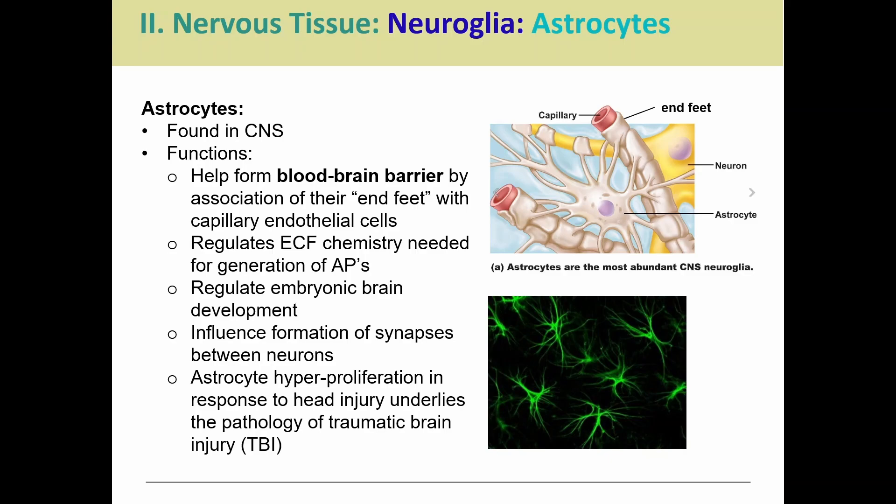Astrocytes are also going to help regulate embryonic development of the brain — that early development — helping influence the synapses, the connections between neurons. And we do see that when someone has a traumatic brain injury, astrocytes multiply way more than normal. They go through what's called hyperproliferation, so we see way more than we would normally see in response to that type of injury.